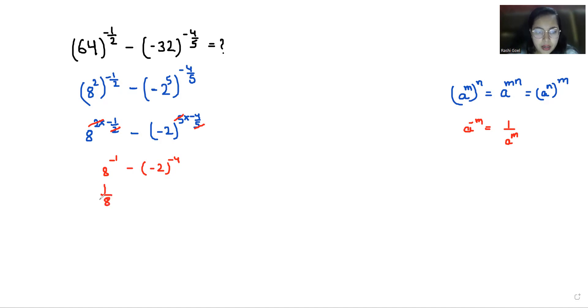So 1/8 minus... negative 2 times negative 2 times negative 2 times negative 2 is positive 16, so it becomes 1/16. Now 2/16 minus 1/16 is 1/16.